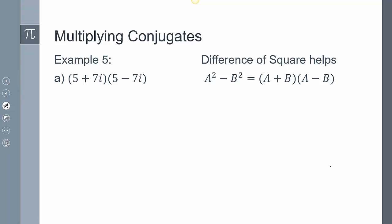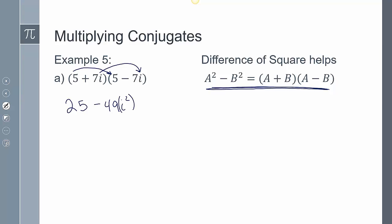When multiplying conjugates, we use the difference of squares pattern a squared minus b squared. We only need the first terms — giving 25 — and the last terms — giving minus 49i squared. Since i squared is negative 1, that's 25 minus 49 times negative 1, which gives 25 plus 49 equals 74.